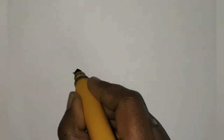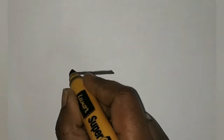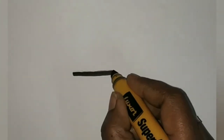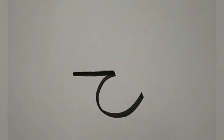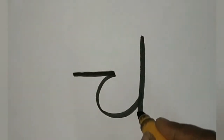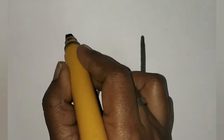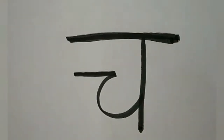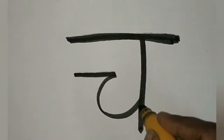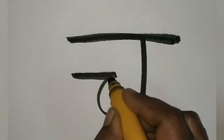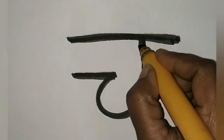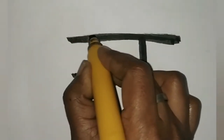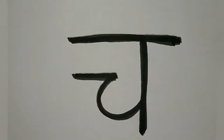Ch. Ch. Here is the lama. First, sleeping line. Sleeping line. Then curve line. Then standing line, then slipping line. First slipping line, curve line, standing line and then slipping line. Okay? Understood?